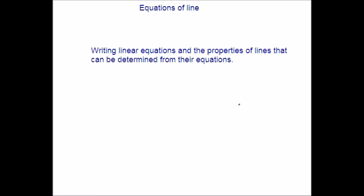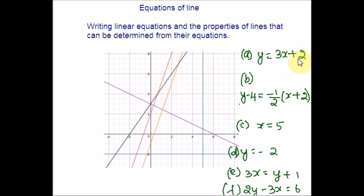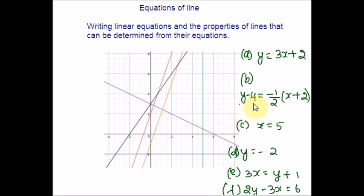Let me post the graph on the board. I have given you a graph and a set of equations so you can easily identify. These are the lines y = 3x + 2, and if you shift this to the other side you will get a slope of 3/2, and shifting again you will get the same slope. So these two lines are parallel. This is y = −2 and x = 5. What you have to do is write the equation in y = mx + c format and then compare it with the slopes of the lines given on the graph.